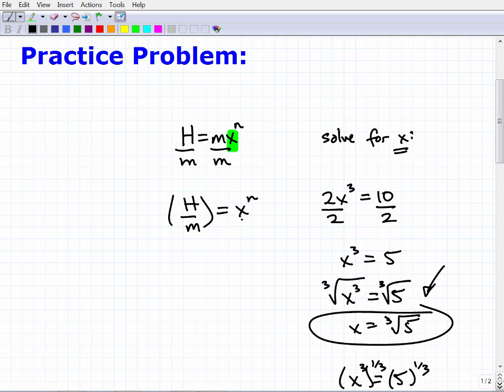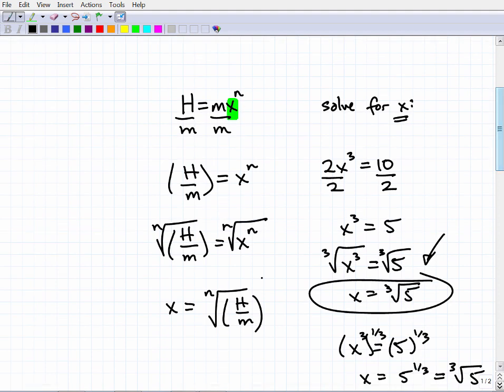Okay, now to get to the X, to solve for X, I need to take both sides of the equation to the Nth root. So we can do it this way. We have X to the N. So I can just take both sides of the equation to the Nth root. So effectively, if you gave me something like X is equal to the Nth root of H over M, then that would be a pretty satisfactory answer.